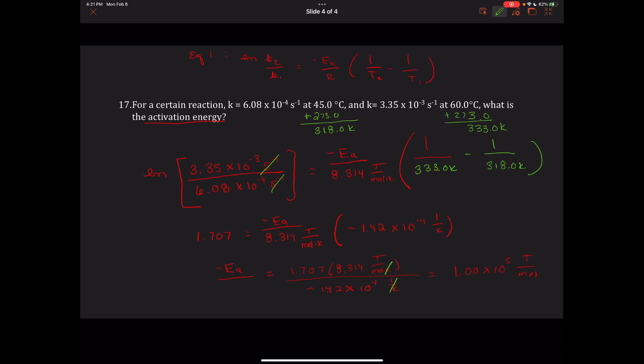We use this two-point method only when we know K for just two values. If we know K for multiple values, we graph it: manipulate the K values by taking natural logs, manipulate temperatures by computing 1 over temperature, then graph to get activation energy from the slope.